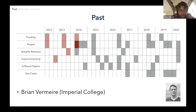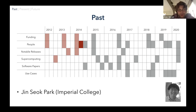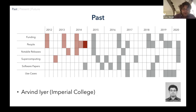Also in 2014, Brian Vermeire was hired as a postdoc in my group. He now leads a group at Concordia University and will be speaking later this afternoon about work on our incompressible solver and convergence acceleration. We had our second release, version 0.2, which added a third backend with OpenCL to support AMD GPUs, and expanded support for element types to tetrahedra and prisms. Jin Sok was hired in 2014 to work on the hyperflux project, and Arvin Dyer was hired as another postdoc, who underpinned a lot of our efforts that were shortlisted for the Gordon Bell Prize in 2016.